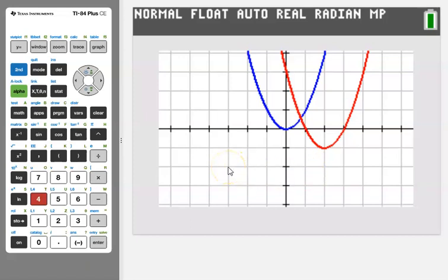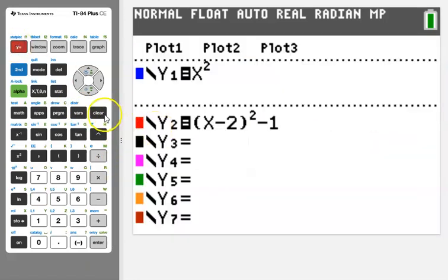In example 2, we're going to do something similar, but this time we'll use an exponential parent function. Let's go back to our y equals and clear the function that is there. We're going to put the function 2 to the x power. Type 2 and then raised to the x power.